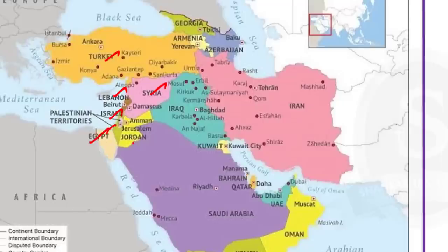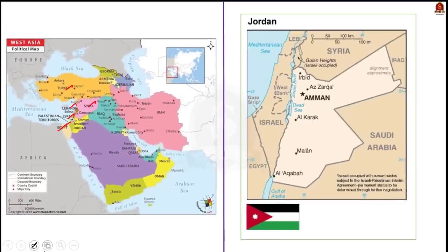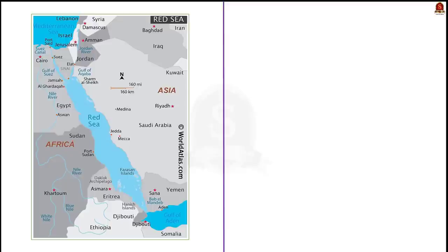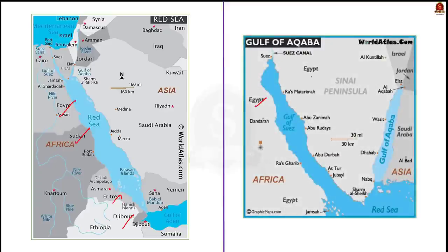Since we have the map of West Asia here, we will now note down the landlocked countries of the region. The only landlocked country in this region is Armenia. You might assume that Jordan might be landlocked, but Jordan is connected to the Red Sea by the Gulf of Aqaba. The Red Sea is bordered by Yemen, Saudi Arabia, Egypt, Sudan, Eritrea, and Djibouti. And the Gulf of Aqaba is bordered by Egypt, Israel, Jordan, and Saudi Arabia.